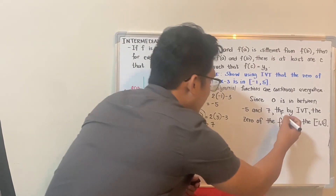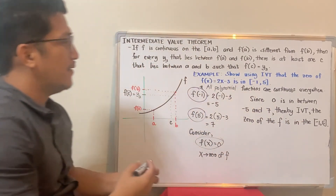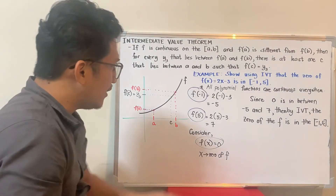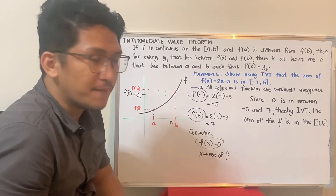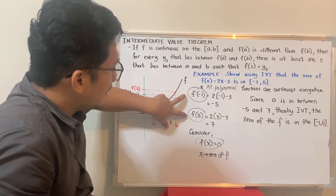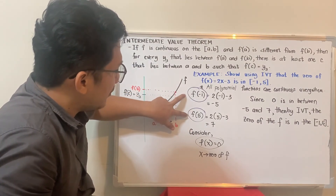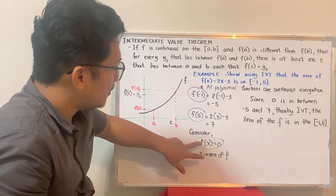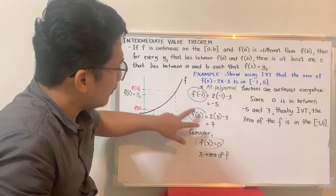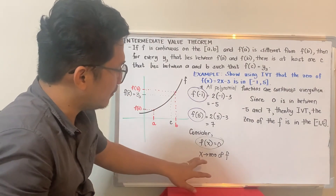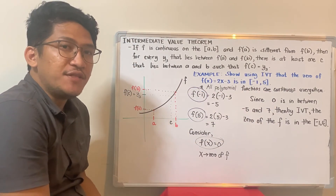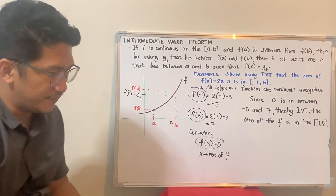So that's how it goes. One of the applications of IVT is trying to show that the zero of the function is in between the given interval. First, check if the function is continuous at the interval. Then get the two values f(a) and f(b). Check if zero is in between them. If it is, then by IVT the zero of the function x is also in between the given interval. That's it for this video. Thank you, see you in the next videos.